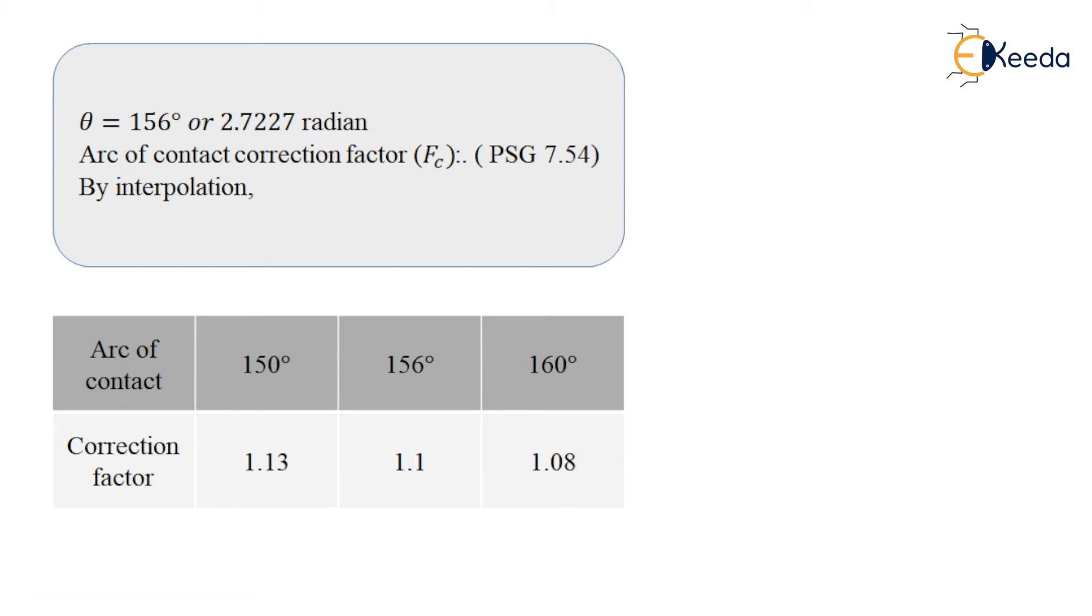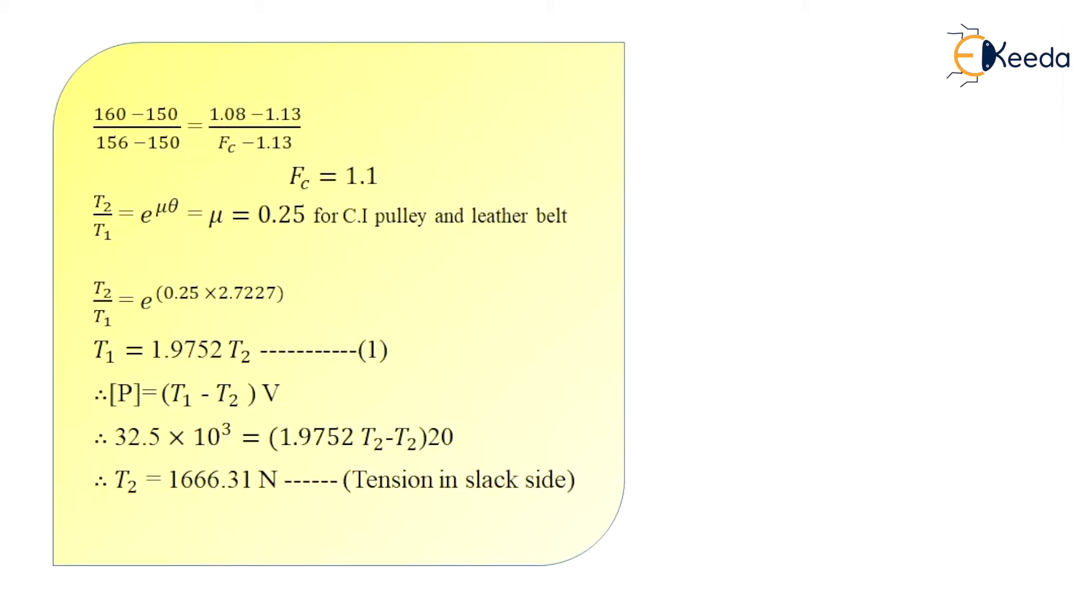The arc of contact correction factor FC is calculated by interpolation. In the table given below you can see arc of contact for different angles: 150 degree, 156 degree and 160 degree, I get the correction factor as 1.13, 1.1 and 1.08 respectively. So if I use the interpolation formula and rewrite as (160 minus 150) divided by (156 minus 150) equals (1.08 minus 1.13) divided by (FC minus 1.13), then I can get the value of FC as 1.1.